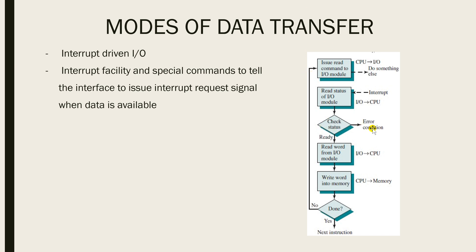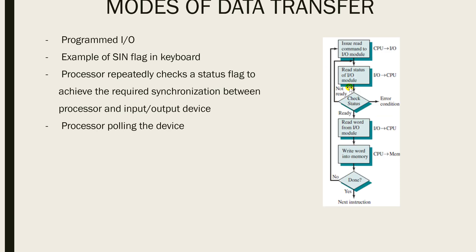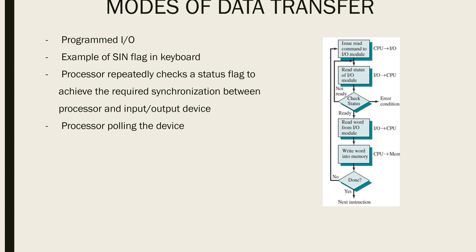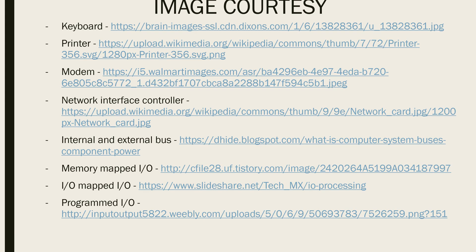If the status is not ready, it goes to an error condition. The key difference from programmed I/O is that the not-ready polling loop is eliminated — an interrupt is generated only when the device is ready with its status. Special commands tell the interface to issue an interrupt request signal when data is available. The interrupt keeps monitoring the device, and when ready, generates an interrupt request to the system. Those are the two modes: programmed I/O and interrupt-driven I/O.